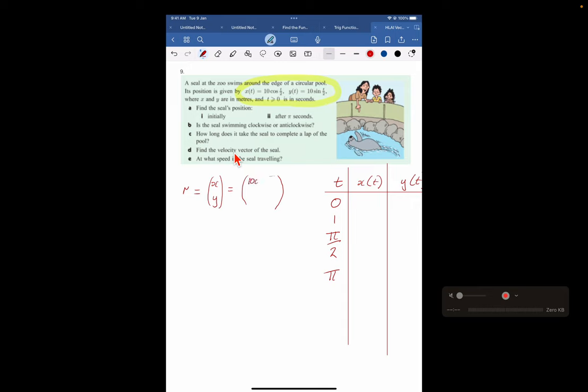No particular benefit to it, I just like doing it. Cos of t over 2, 10 sine t over 2. And part a wants the seal's position initially, so that's obviously when t equals 0. So really, you're just going to substitute these in and calculate the actual x and y positions. So let's try it: x equals 10 cos 0, and y equals 10 sine 0. Obviously, sine of 0 is 0, so the whole thing is 0 here. And cos of 0 is 1, so 10 times 1 is 10. So that's a very quick and easy first entry.